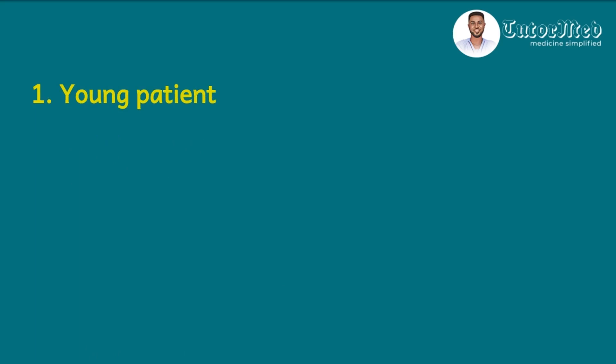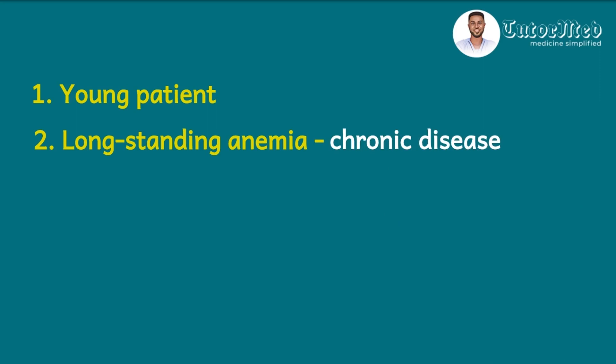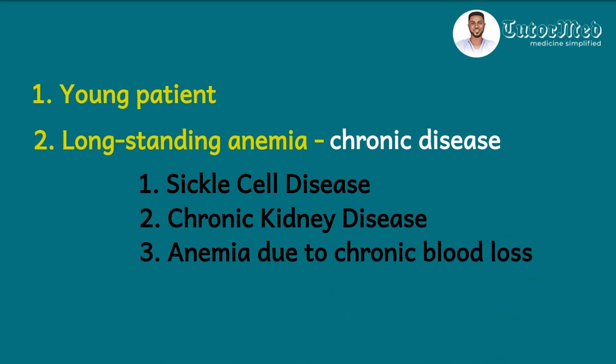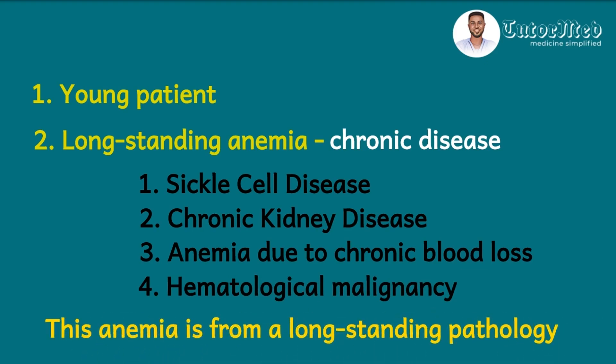Let's see how to generate the relevant questions to ask in the history. The patient is a 17-year-old with a long-standing anemia. The word 'long-standing' indicates a chronic disease. The key to answering question one is to find the causes of chronic anemia, which include sickle cell disease, chronic kidney disease, anemia due to chronic blood loss like a bleeding peptic ulcer, and anemia from a hematological malignancy like leukemia. The patient's anemia is from a long-standing pathology.